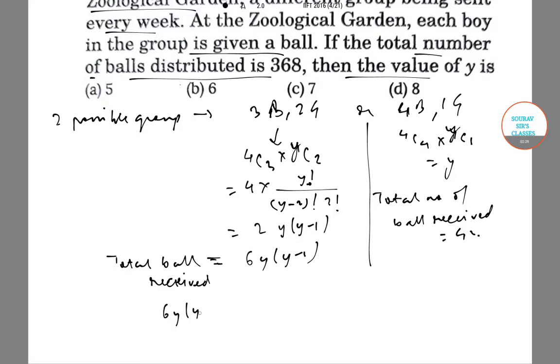Now, 6y(y minus 1) plus 4y is equal to 368. Or 6y squared minus 6y plus 4y is equal to 368.